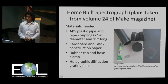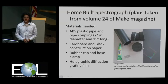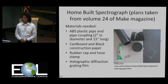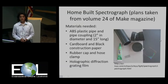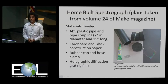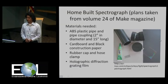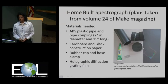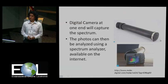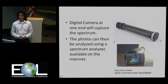The spectrograph will be built using plans published in Make magazine, and requires very simple materials like ABS plastic pipe, black construction paper and cardboard, and holographic diffraction grating, which are very easy to obtain. The spectroscope will be modified into a spectrograph by having a camera programmed to capture those spectra every 30 seconds or so in the atmosphere.